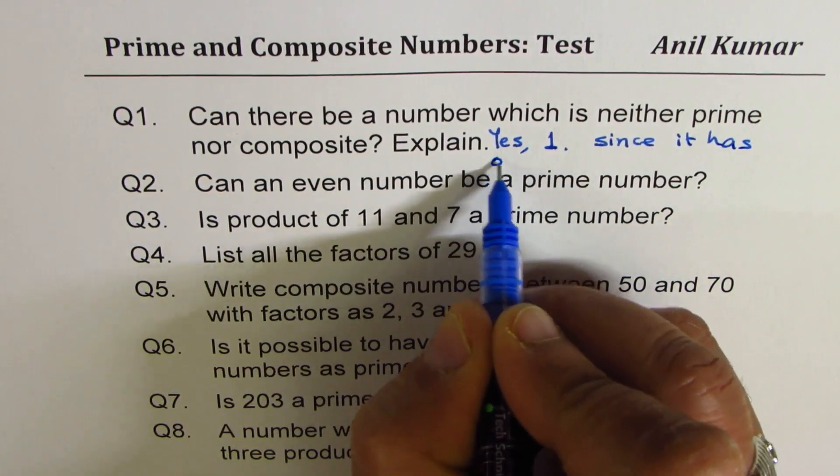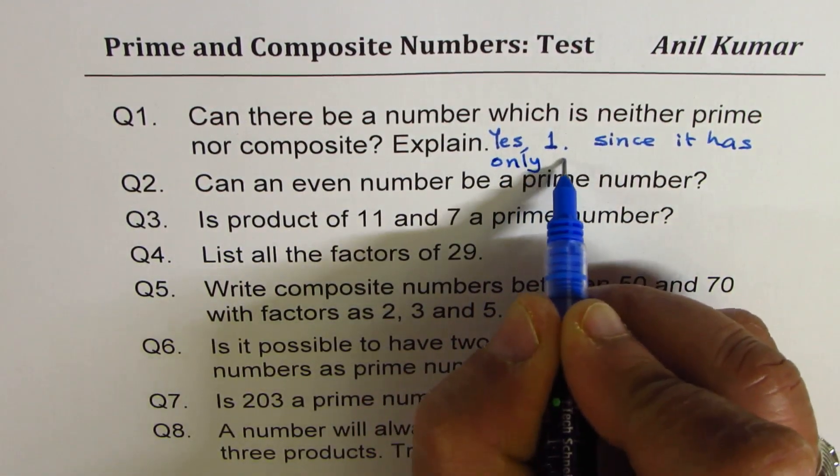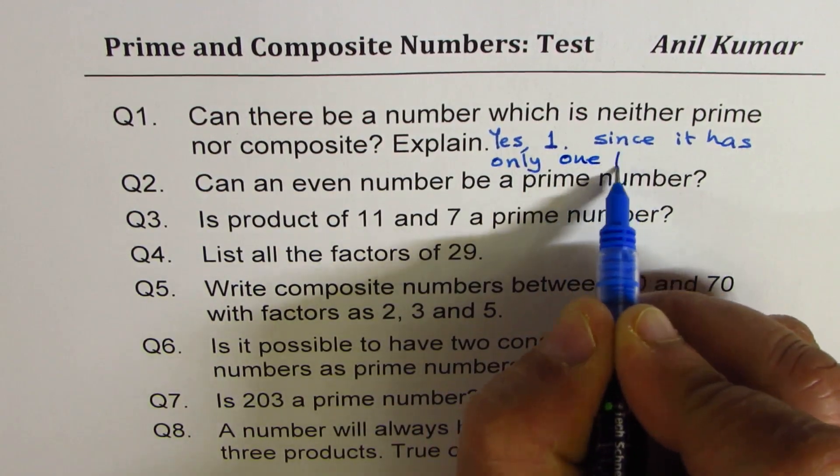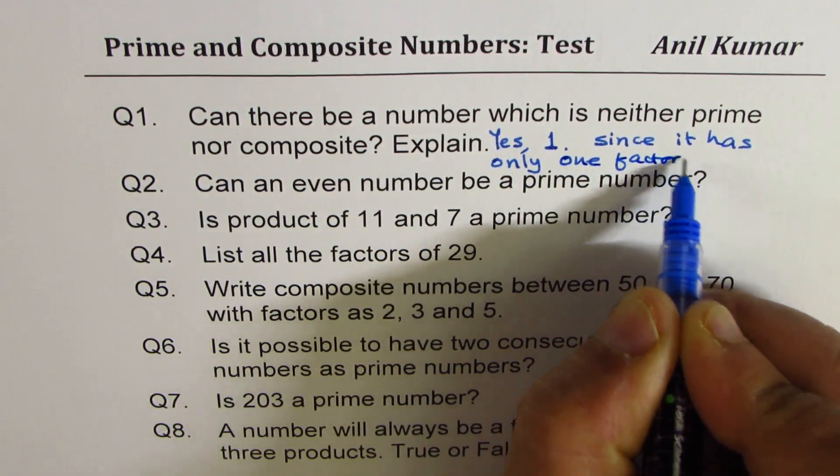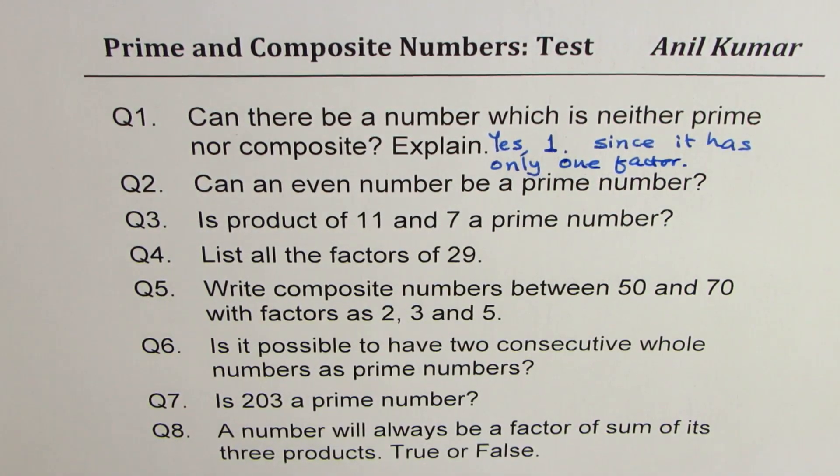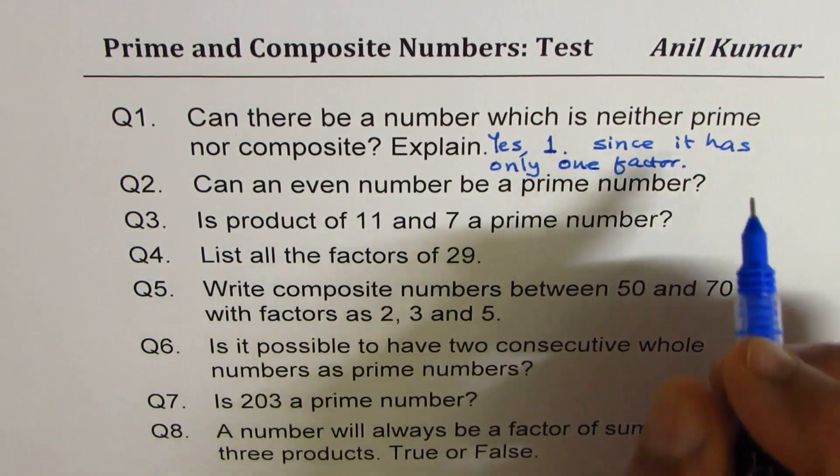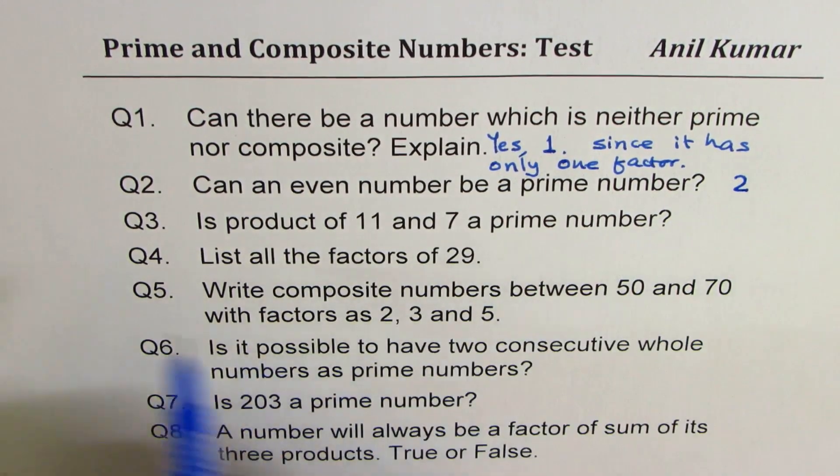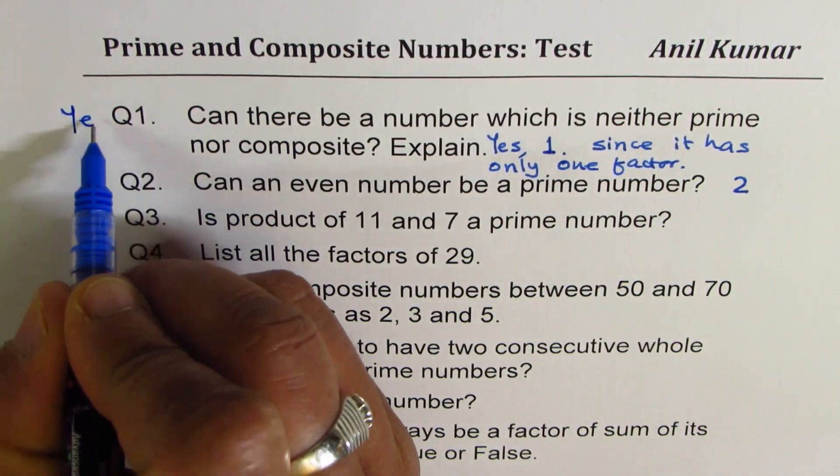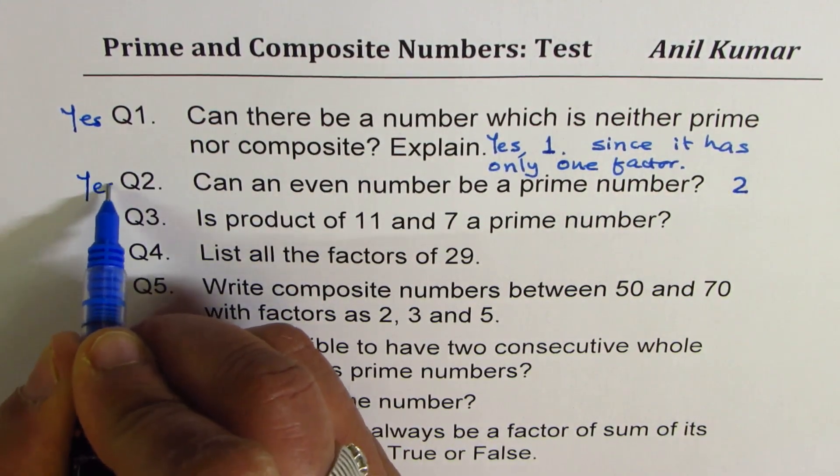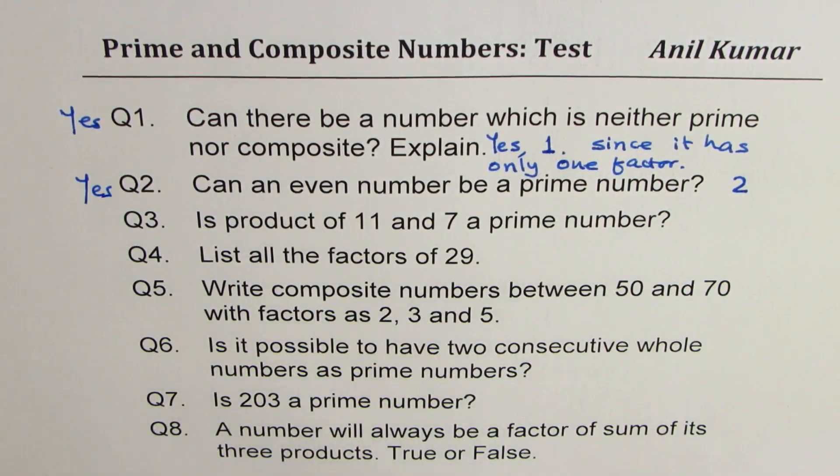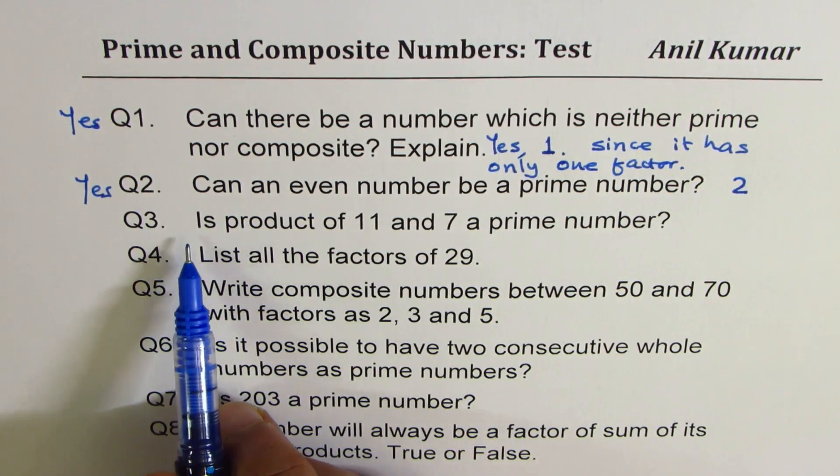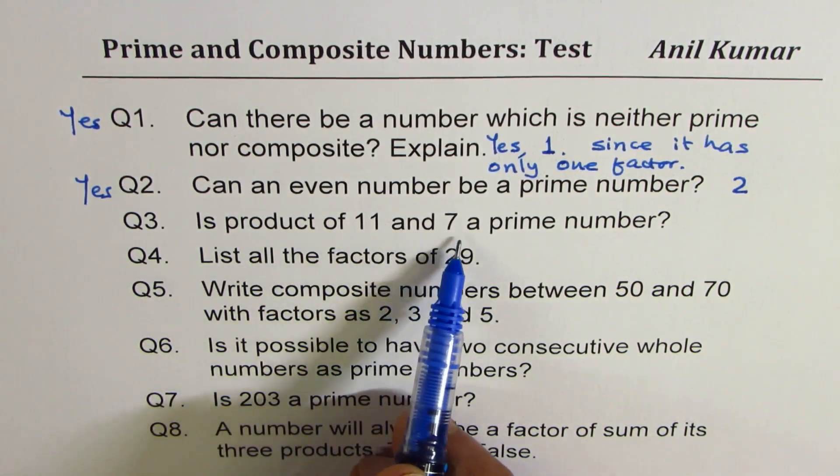Question 2: Can an even number be a prime number? Yes. The number is 2, right? So we have yes for the first one, yes for the second one, and that's the only even number which can be a prime number.